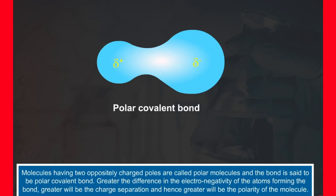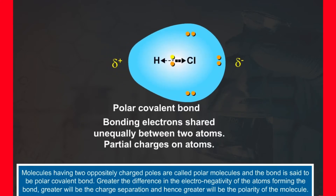Molecules having two oppositely charged poles are called polar molecules, and the bond is said to be a polar covalent bond. Greater the difference in the electronegativity of the atoms forming the bond, greater will be the charge separation and hence greater will be the polarity of the molecule.